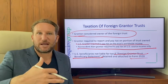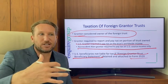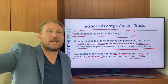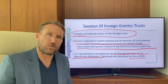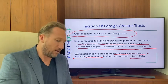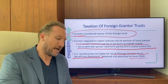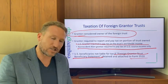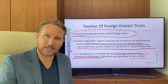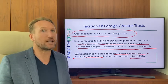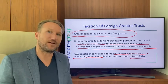...and the trustee sends the foreign grantor trust beneficiary statement, and my kid attaches it to Form 3520 and files it, my kid doesn't have to pay any tax on that distribution. That's a pretty cool result — something to definitely think about.